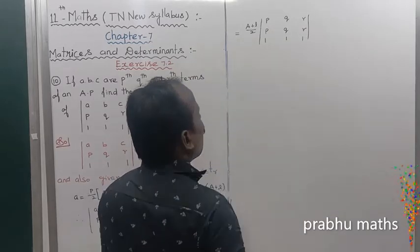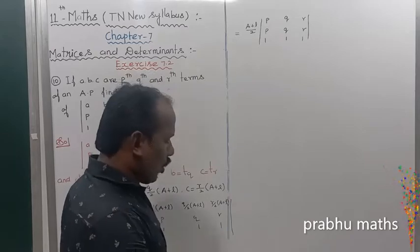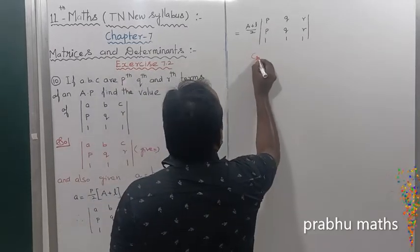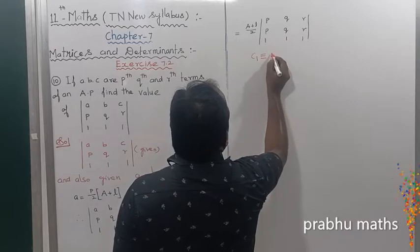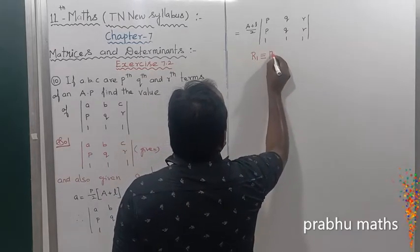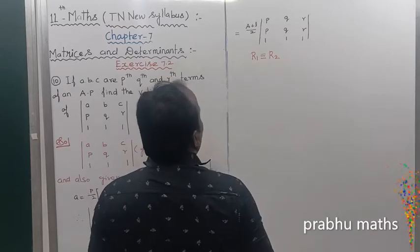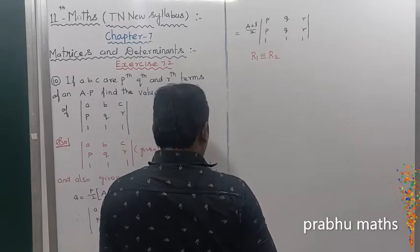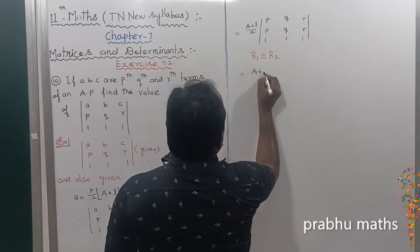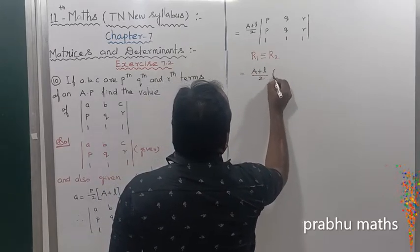For any determinant, if two rows or columns are identically equal, that determinant is going to zero. R1 is identically equal to R2, so that determinant is going to zero. That is equal to (a + l)/2 times zero.